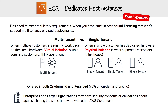To compare these two, I think of multi-tenant as everyone living in an apartment, and single-tenant as everyone living in a house. Why would we want our own dedicated hardware? Large enterprises and organizations may have security concerns or obligations about sharing the same hardware with other AWS customers. It really just boils down to that.